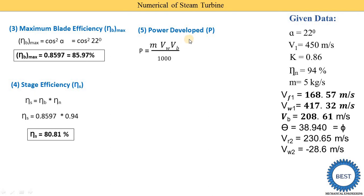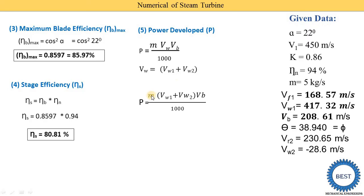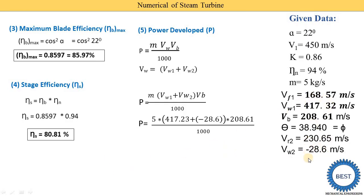The last parameter is power developed P. Power P equals mass into whirl velocity into blade velocity divided by 1000. Mass is given as 5. VW equals VW1 plus VW2. Putting in values: mass equals 5, VW1 equals 417.32, VW2 equals minus 28.6, Vb equals 208.61, divided by 1000. We calculate and get power equal to 405 kilowatt.